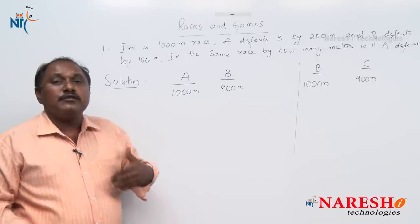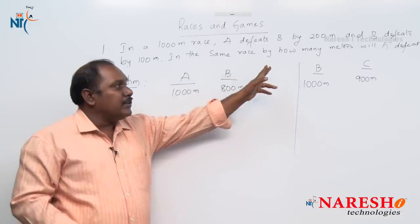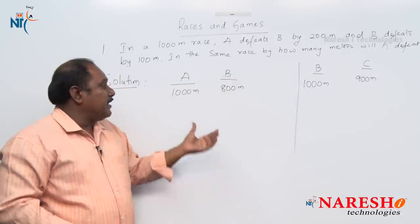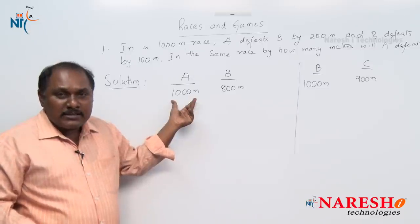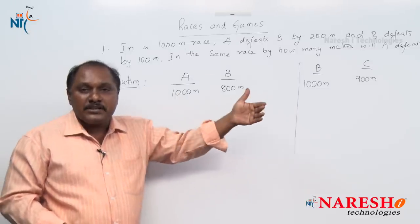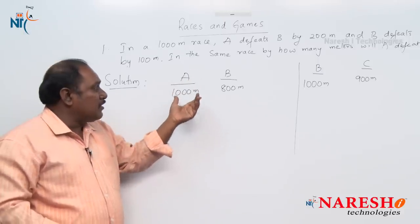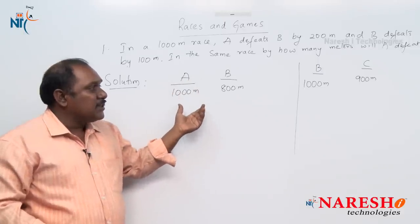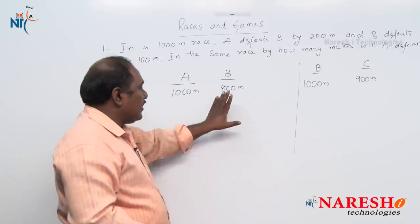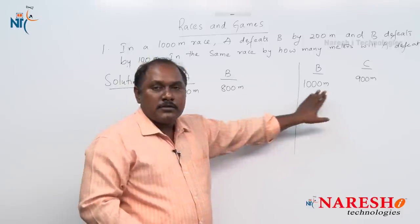What we have to find out is: in the same race, by how many meters will A defeat C? That is, by the time A completed the race, how many meters is C behind the finish line? So I need to find out, by the time A completed 1000 meters, how many meters did C run. There is one person common in both statements, and that is B.